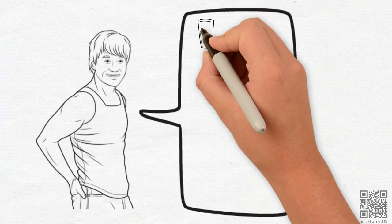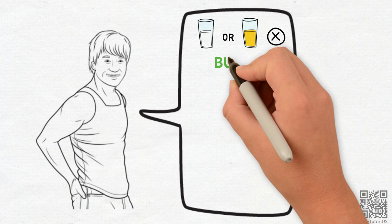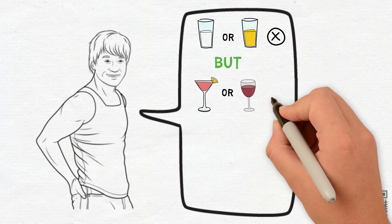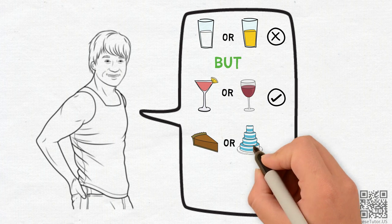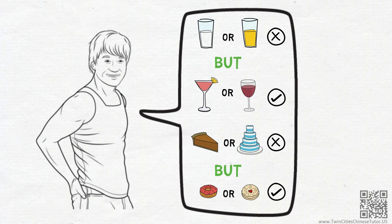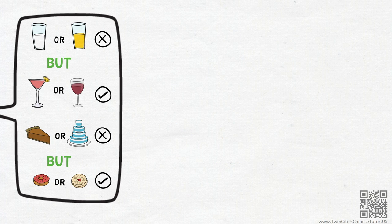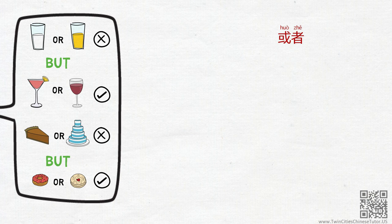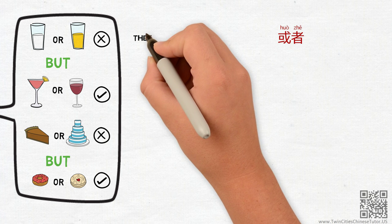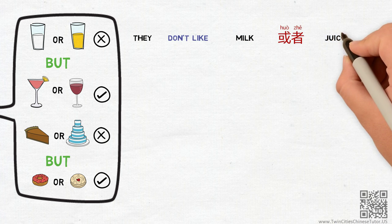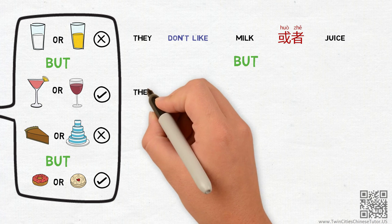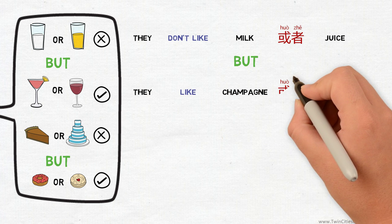Now imagine if Jackie says, They don't like milk or juice, but they like champagne or wine. They don't like pie or cake, but they love donuts or pancakes. Can you think of the proper way of saying these statements in Chinese? Pause the video if you want to take a second. Okay, I'm sure you know that 或者 is what we need here. So the sentences will be, They don't like milk or juice, but they like champagne or wine.